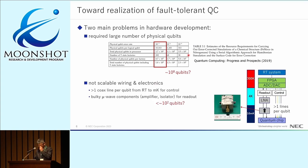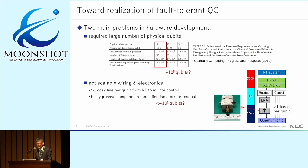The second problem is scalable wiring and electronics. This represents the typical setup of a superconducting quantum computer, where the quantum chip is at the base temperature of the dilution refrigerator and must communicate with room-temperature electronics via microwave coaxial cables. Typically, for the control part we need more than one coaxial cable per qubit from room temperature to 10 mK, and for the readout part we have bulky microwave components such as low-noise cryogenic amplifiers or circulators. Due to the limited space and cooling power of the dilution refrigerator, this brute-force approach cannot scale beyond maybe 100 or 1000 qubits.